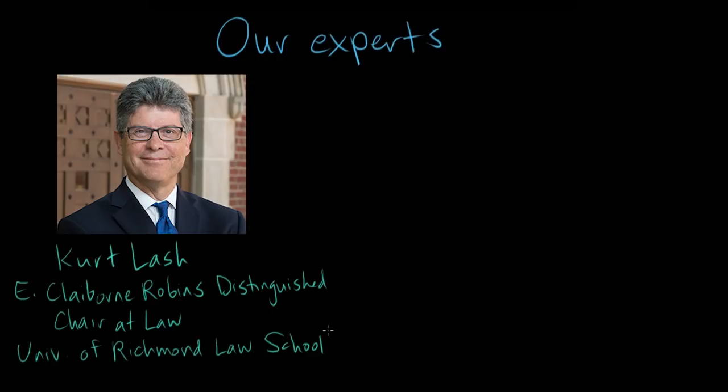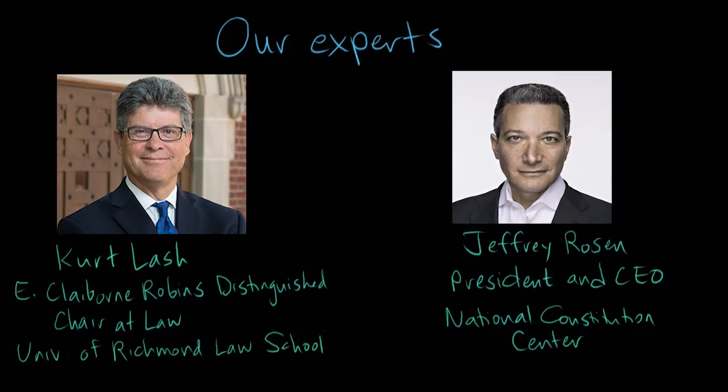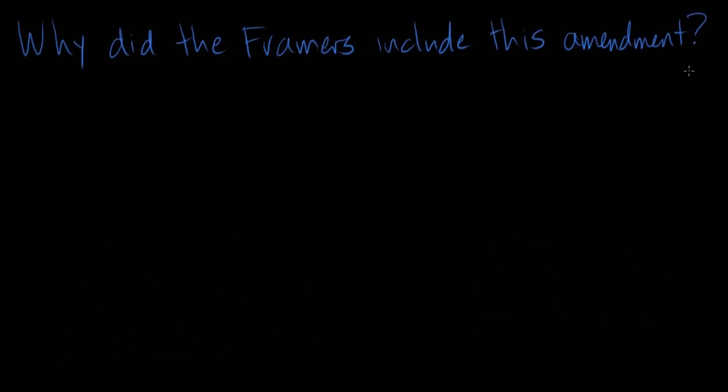Kurt Lash is the E. Claiborne Robbins Distinguished Chair in Law at the University of Richmond School of Law. Jeffrey Rosen is the President and CEO of the National Constitution Center. He's written extensively on the history of the Supreme Court. Professor Lash, can you tell us a little bit more about this amendment?